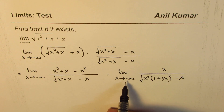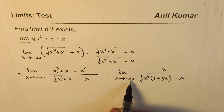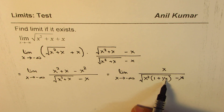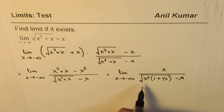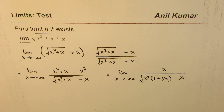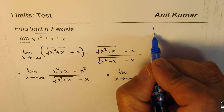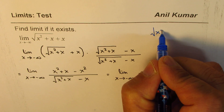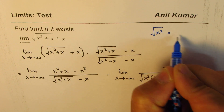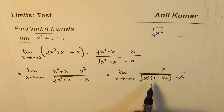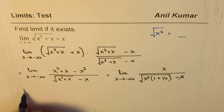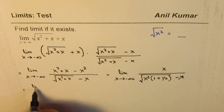Now, when x is approaching minus infinity — a very large number — 1 over x approaches zero. So this term is essentially square root of x squared. Now the question is: what is square root of x squared equal to? Think about this, because that is where most students make a mistake.